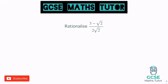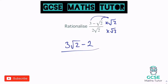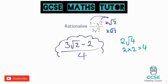Next: three minus root two on the top, two root two on the bottom. Times the top and bottom by root two. On the top, root two times three gives three root two, and root two times negative root two gives negative root four, which is minus two. On the bottom, two root two times root two: two times one is two, root two times root two is root four, giving two root four which is two times two, which is four. So our final answer is three root two minus two over four.